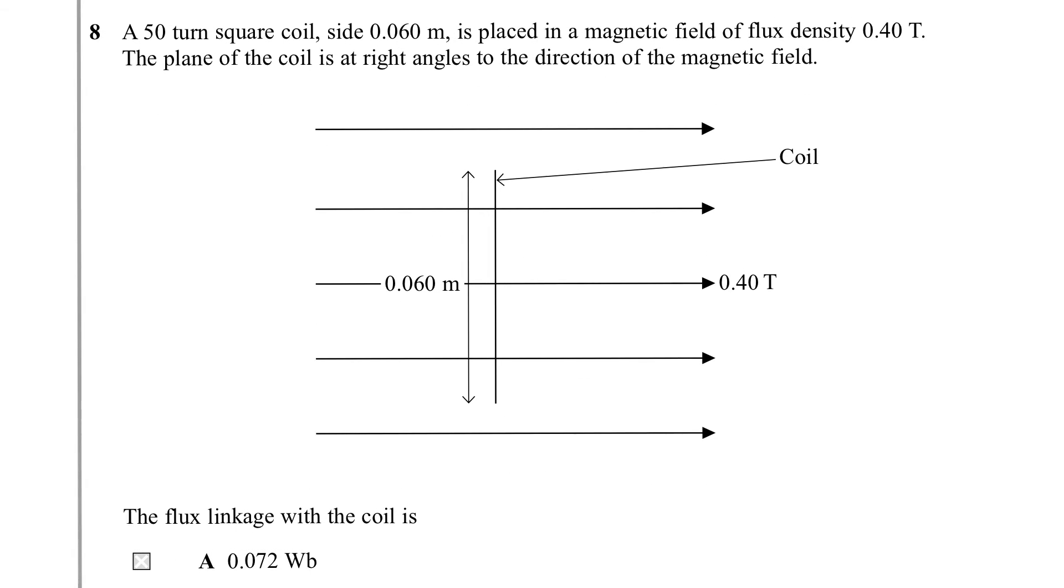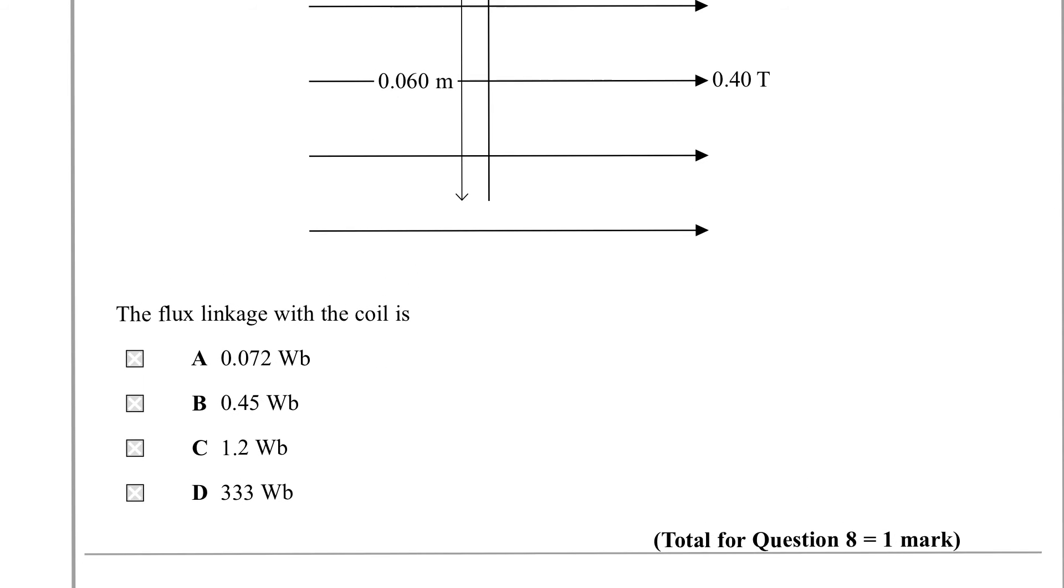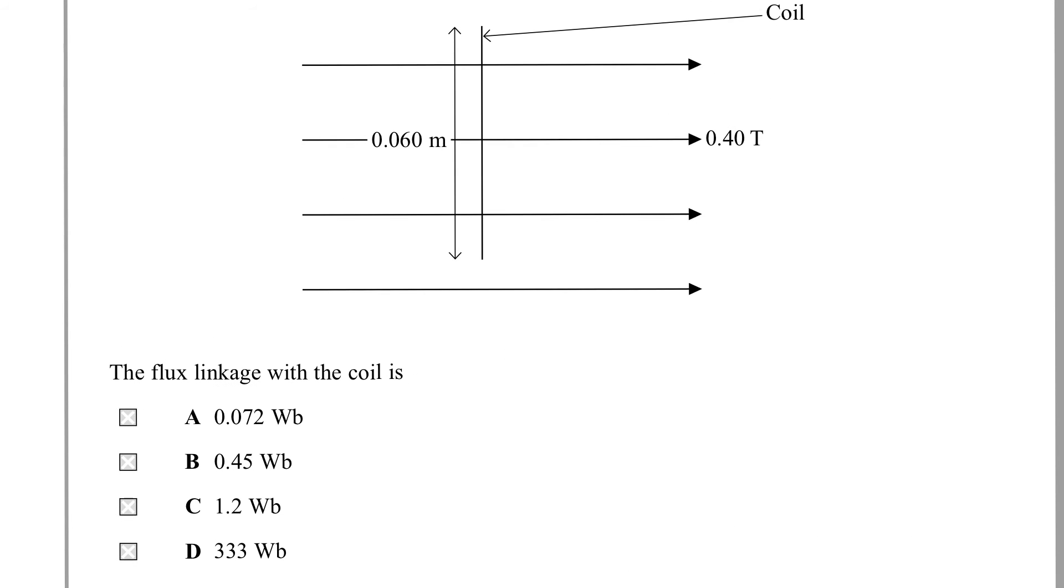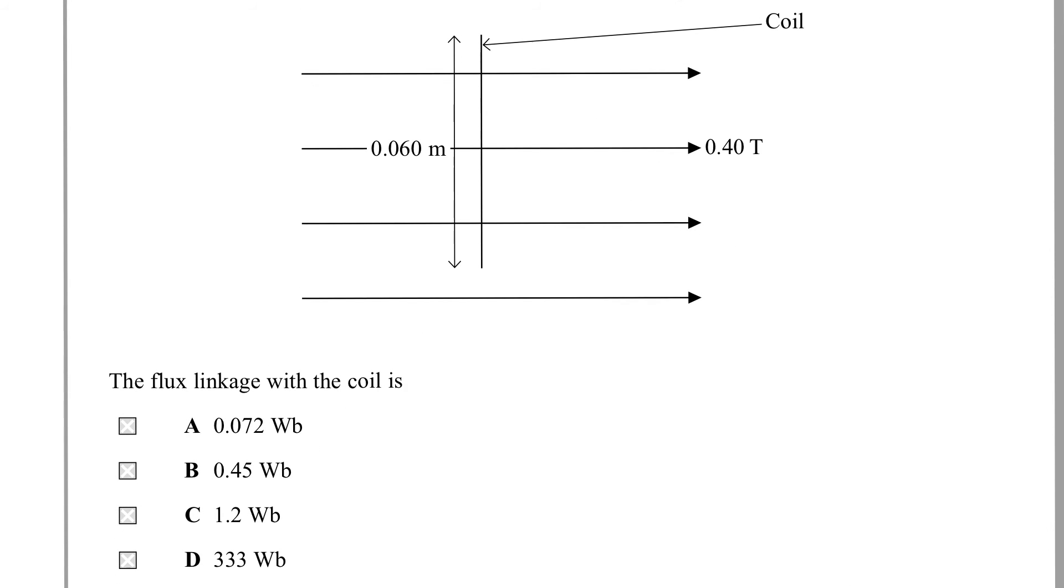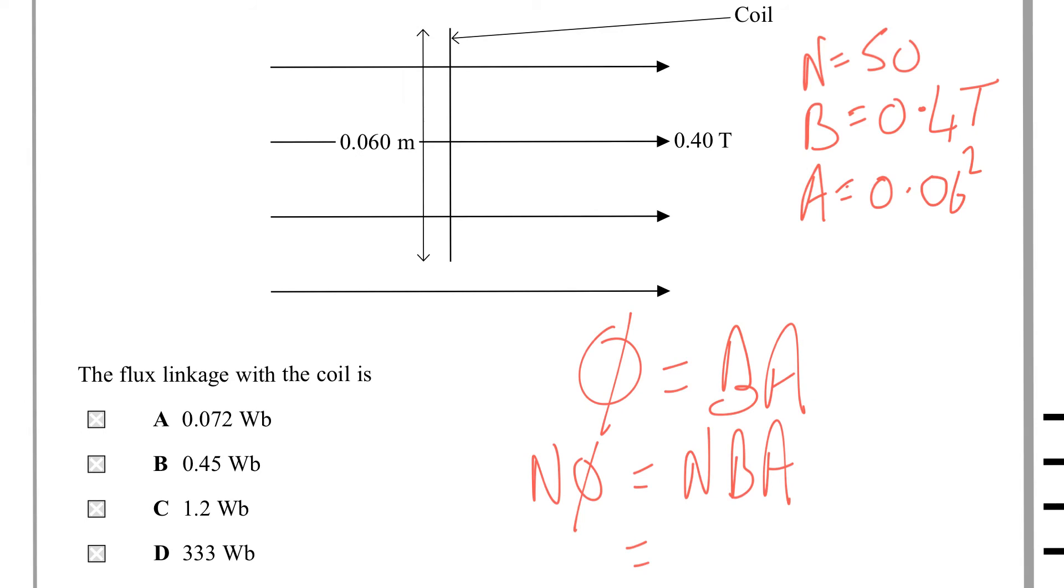Question 8. A 50 turn square coil of side 0.06 of a meter is placed in a magnetic field of flux density 0.4 tesla. The plane of the coil is at right angles to the direction of the magnetic field, and you're showing it there. So we can't see the coil, we can just see a plan view of it here. And they're asking which one of these is the linkage. Phi is equal to B A, and the linkage n phi is equal to n B A. So we just remind ourselves of the values: n is 50, B is 0.4 tesla, and A is 0.06.